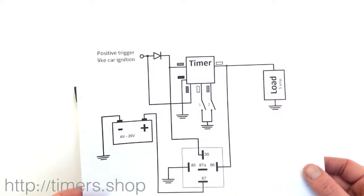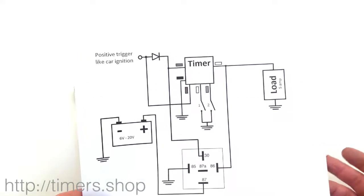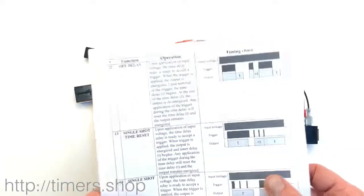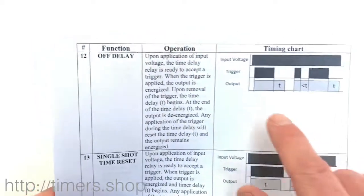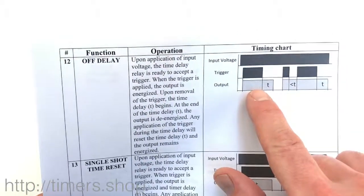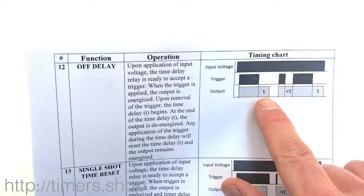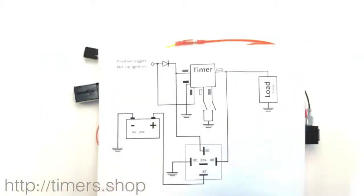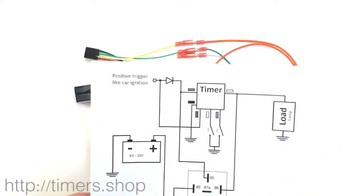So off delay, this would be function 12. Function 12 allows us to supply the output as soon as the trigger is on and then stay on for a period of time when the trigger drops off, when the ignition turns off.